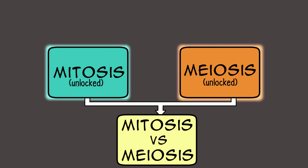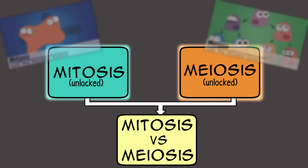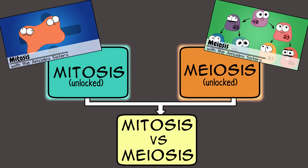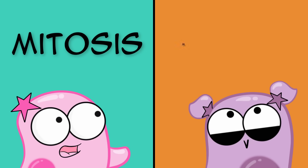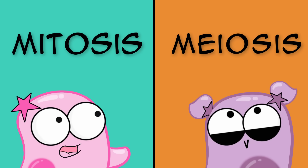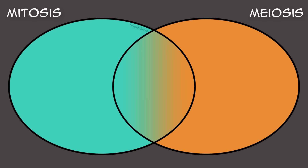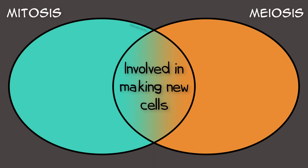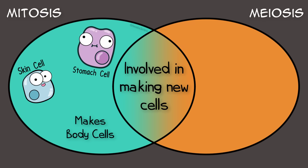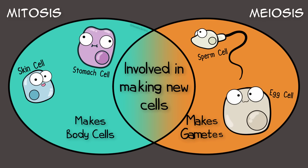We assume you already have a background of mitosis and meiosis—if not, take a look at our videos on them—but this video is a side-by-side comparison, presented in a split screen: mitosis on the left, meiosis on the right. Both of these processes, along with the cytokinesis that follows them to split the cytoplasm, are involved in making new cells. Mitosis results in body cells. Meiosis results in sperm and egg cells—otherwise known as the fancy term, gametes.